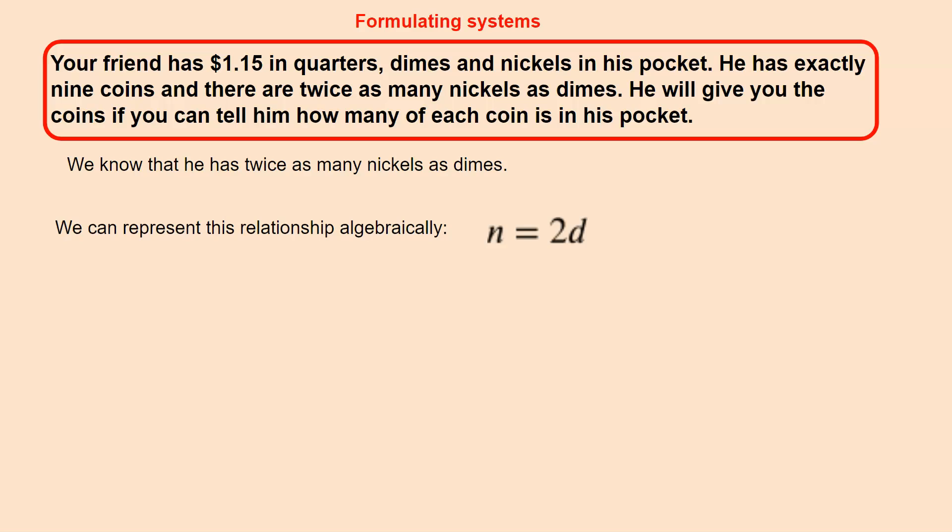Matter of fact, you can get the amount of nickels by taking the amount of dimes and multiplying by two. If you double the dimes, you'll get the amount of nickels. A way to think about it is, if he had three dimes, then he would have six nickels, because you would multiply the three by two. That's one way to think about it.